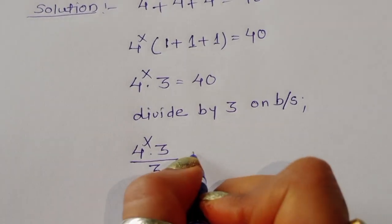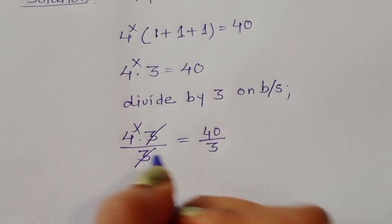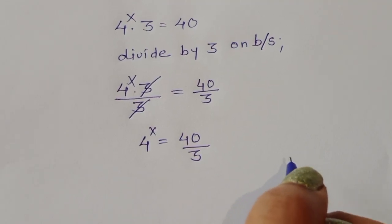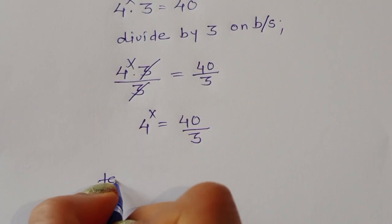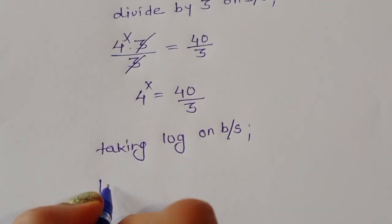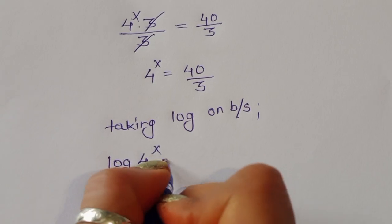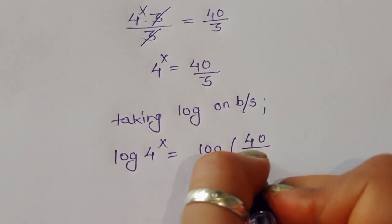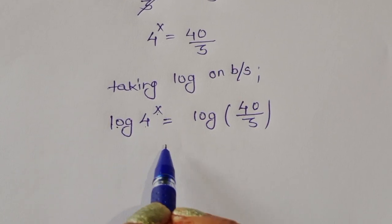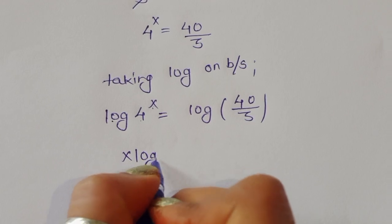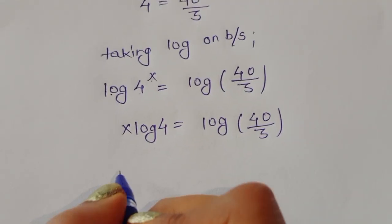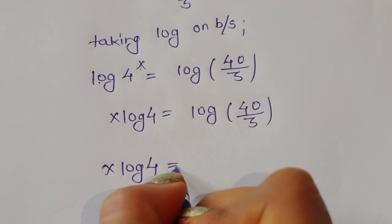4^x times 3 divided by 3 equals 40 divided by 3. The 3 cancels, so 4^x is equal to 40 divided by 3. Now we take log on both sides, giving log(4^x) is equal to log(40/3). We know the formula log(a^b) equals b·log(a), so x·log(4) equals log(40/3).